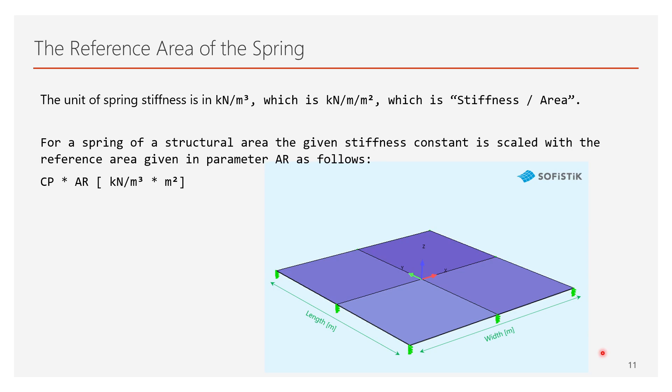Now, let's head back to the reference area AR I mentioned at the beginning of the video. In SOFiSTiK, the stiffness of a spring is defined in the unit of stiffness over area, which is kN per meter per meter square, yielding to kN per cubic meter unit.